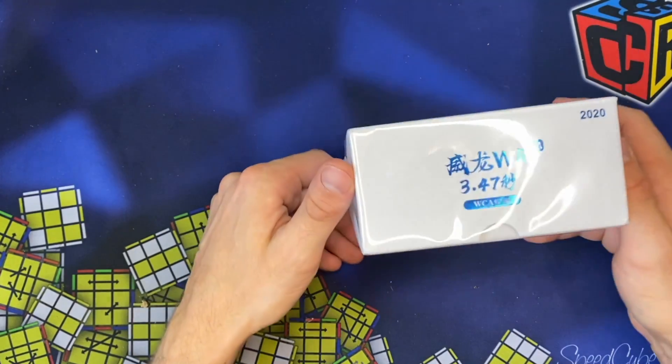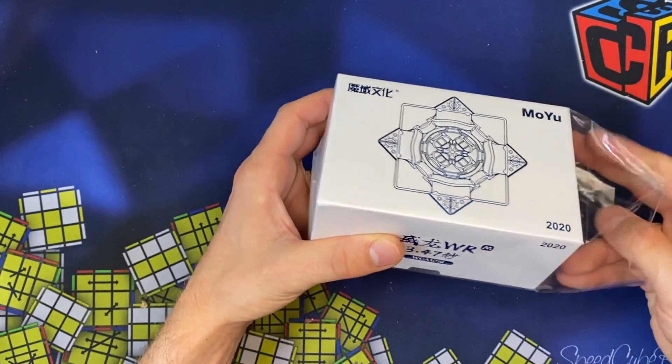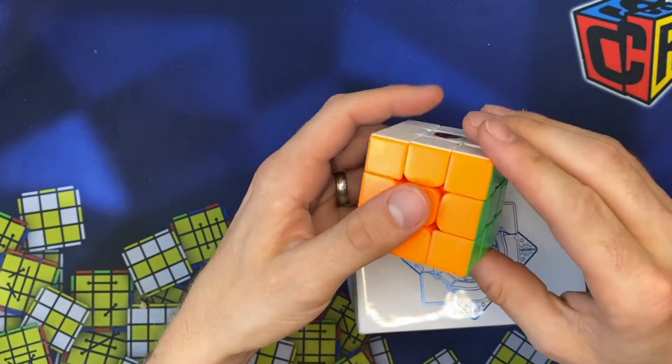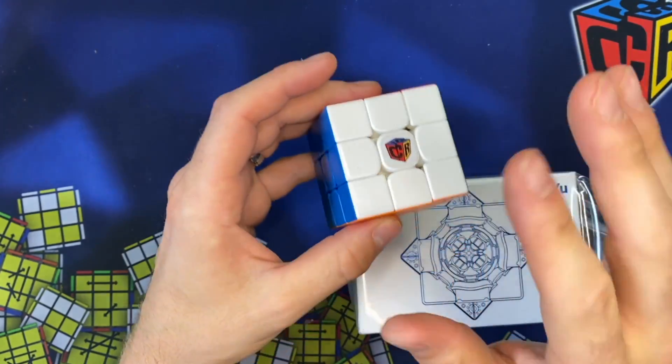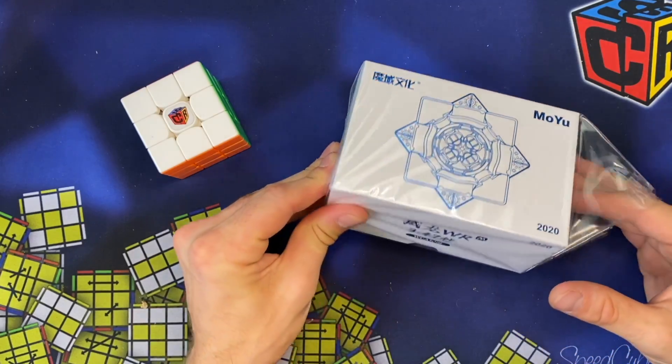And this is the new Moyu WRM 2020 edition. Moyu has come out with another 2020 edition puzzle, which was the RS3M 2020. And what was different with this is we had the dual adjustment system and the matte plastic. There are little tweaks to the pieces, but not too much.